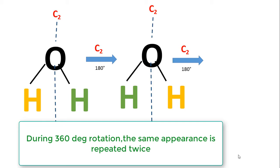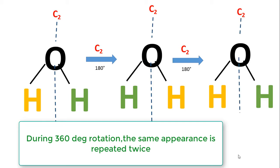If we rotate it through another 180 degrees — a total of 360 degrees — we get the original appearance repeated. So during a rotation of 360 degrees the original appearance is repeated two times, and therefore this axis is known as the C2 axis.